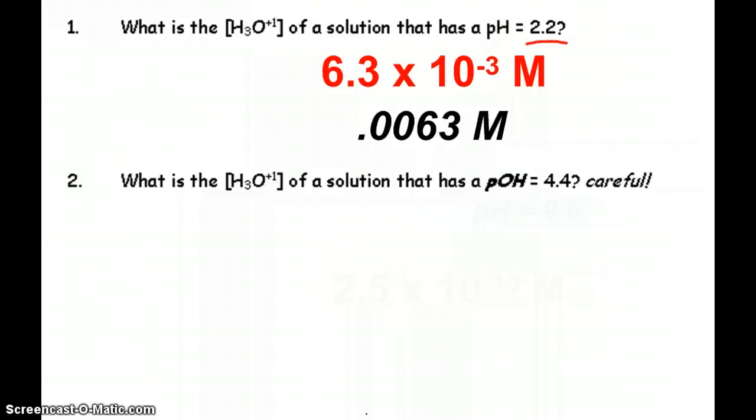Now the second one there, what's the hydronium concentration for a solution that has a pOH of 4.4? Okay, it says careful there, because if I want to find the hydronium concentration, as we saw, that is 10 to the negative pH. Hydronium and pH go together. So since I gave you pOH, you have to remember, aha, the pH is 9.6, because they have to add up to 14.